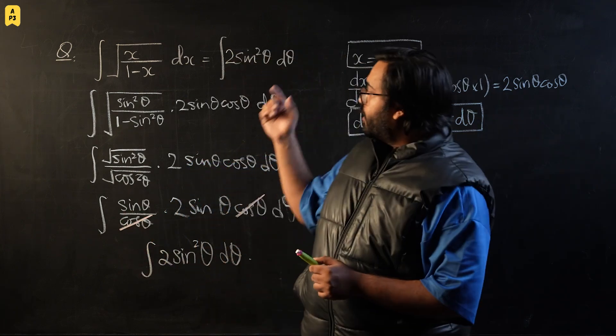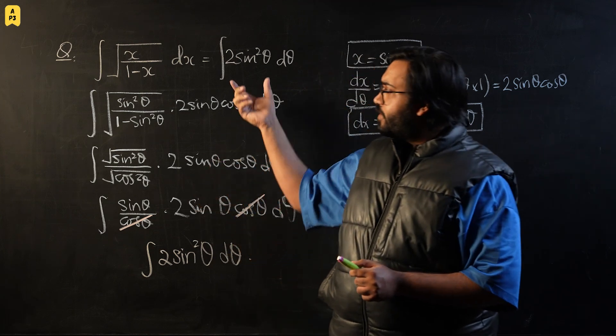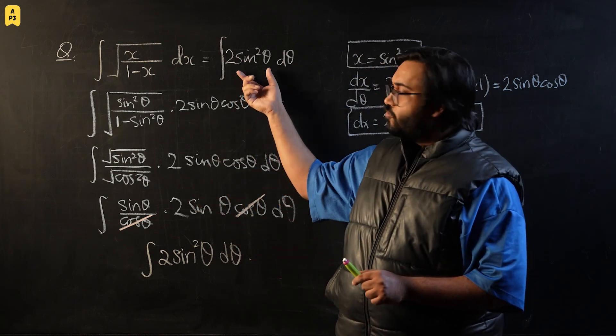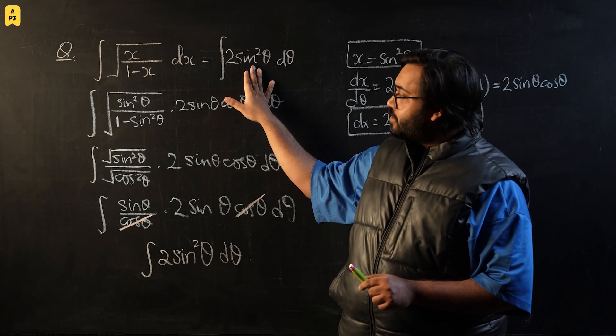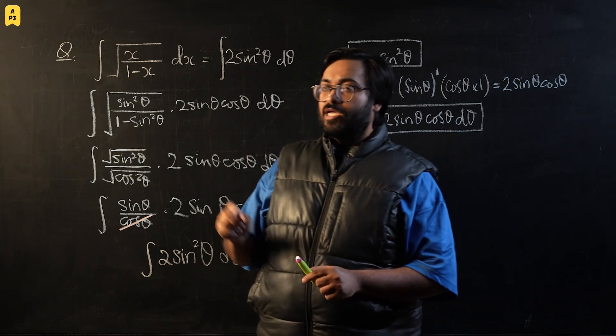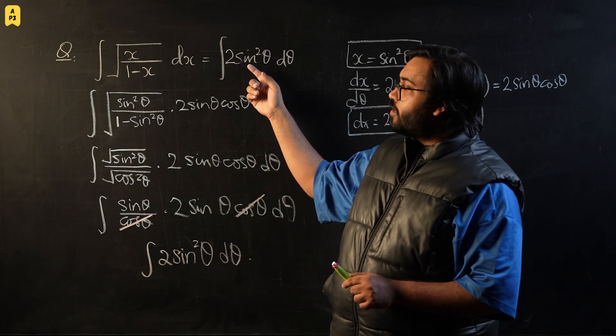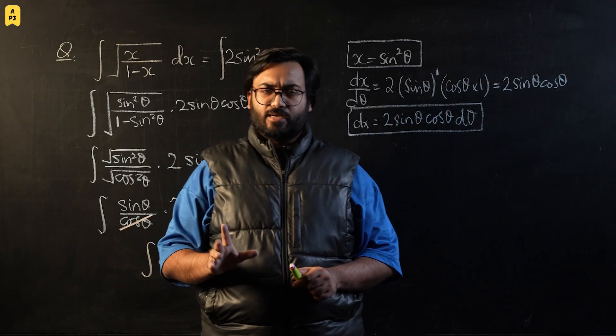We will cover it in some later video. I will just leave a subtle hint for those of you who want to solve this. We would use a double angle identity of cos to integrate this sin²θ. You would try to substitute (1 - cos2θ)/2 in this sin² and this will be solved very easily in a couple of steps.